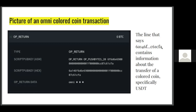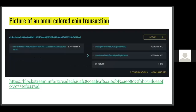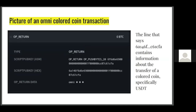The line '6a...fa' contains information about the transfer of a colored coin. In this case, the person was transferring Tether — and this transfer happened directly on Bitcoin's blockchain, not on Liquid, testnet, or Lightning. This is a transfer of US dollar Tether from one person to another by means of this piece of text. Let's break down what's inside it, the way an Omni wallet would read it.